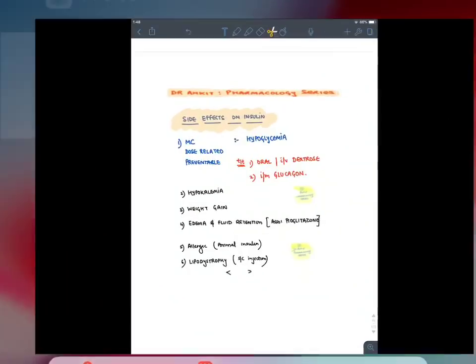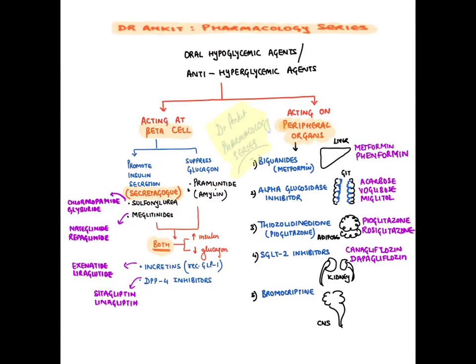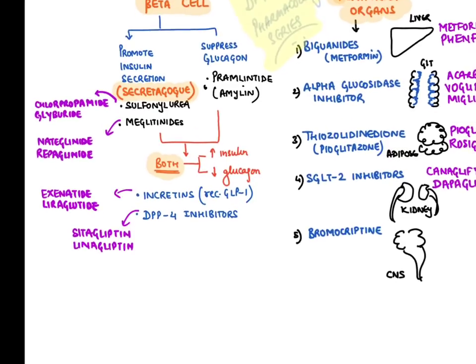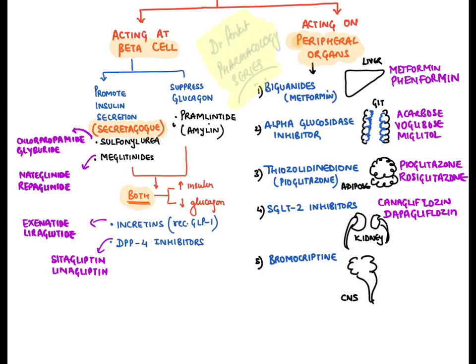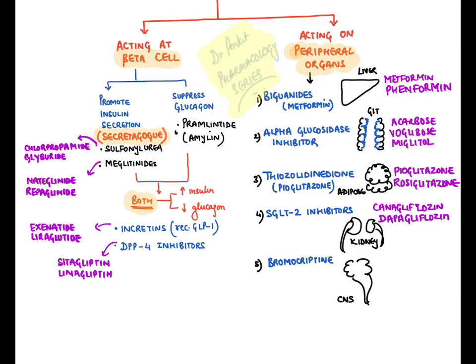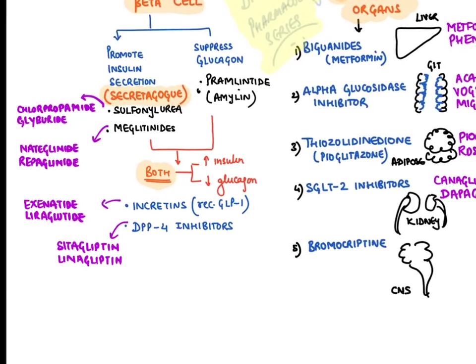The other drugs apart from insulin are oral hypoglycemic agents, also known as anti-hyperglycemic agents. These can be divided into drugs acting at the pancreas level or peripheral organ level. At the pancreas level, drugs acting on beta cells promote insulin secretion — known as insulin secretagogues — which include sulfonylurea and meglitinides. Sulfonylurea are of two generations. Chlorpropamide and glyburide are examples. Meglitinides all end with the word 'glinide.' These drugs close potassium channels on beta cells, promoting insulin secretion. Pramlintide suppresses glucagon production by acting on alpha cells. Incretins are recombinant GLP-1 analogs ending with the word 'tide' — like exenatide, liraglutide.